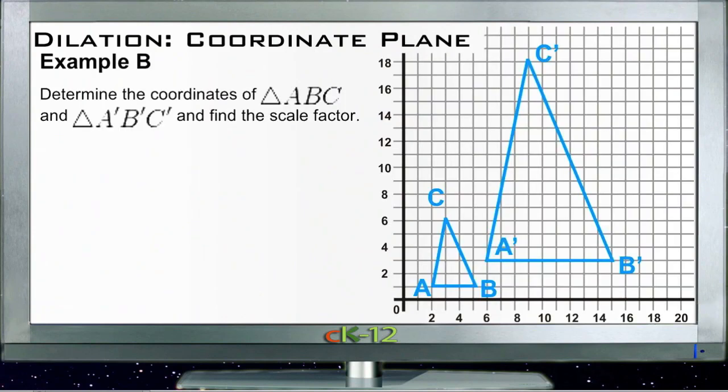All right, Example B. Example B says determine the coordinates of triangle ABC and triangle A'B'C' and then find the scale factor. So the first thing we need to do is find out what these coordinates are of these vertices. So for our little triangle ABC, A would be at (2, 1), B would be at (5, 1), and C is at (3, 6).